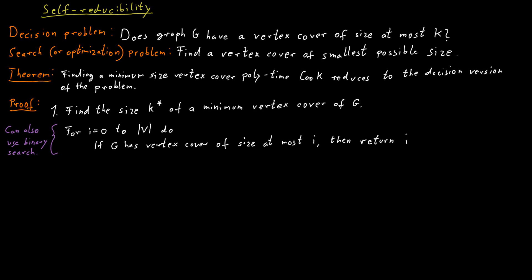So now we know how large our final vertex cover should be. Let's call the size of the minimum vertex cover k star. Here's how we find such a vertex cover. We take the graph and we look for a vertex v such that if we remove the vertex v from the graph, then the remaining graph has a vertex cover of size at most k star minus 1. And we can check for each vertex v whether the remaining graph would have a vertex cover of size at most k star minus 1 using our oracle, using access to this algorithm for the decision problem.